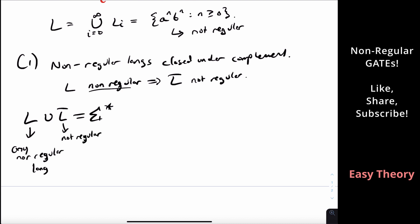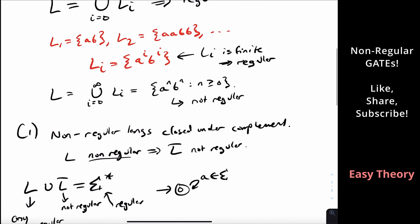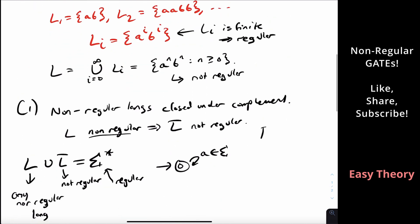But their union is sigma star, which is regular, because we can just make a simple DFA that loops on all sigma like this, so it accepts every string. Because every string is in either L or L bar, we can conclude that their union is sigma star. So this claim for one is also false.